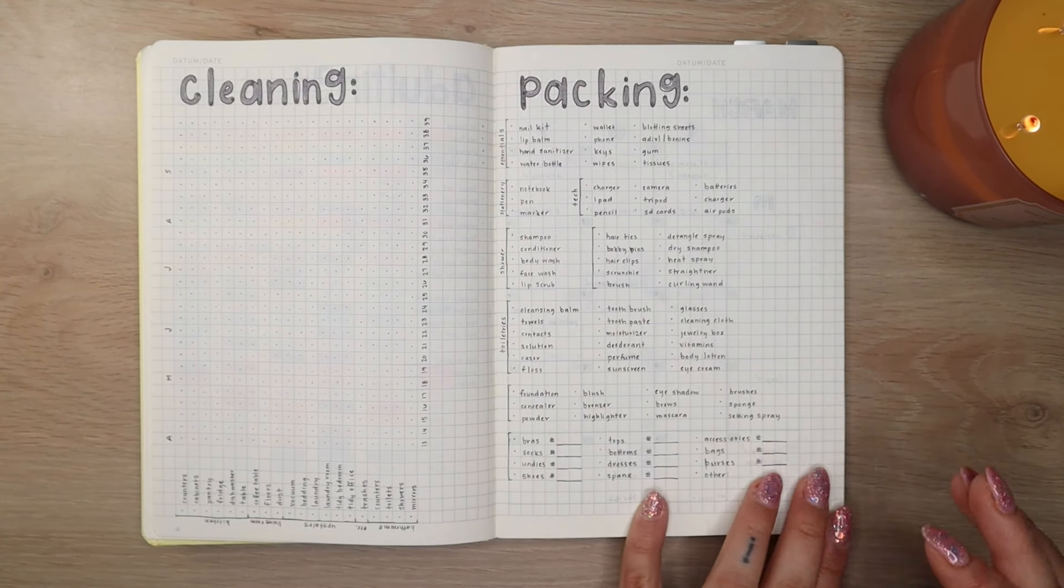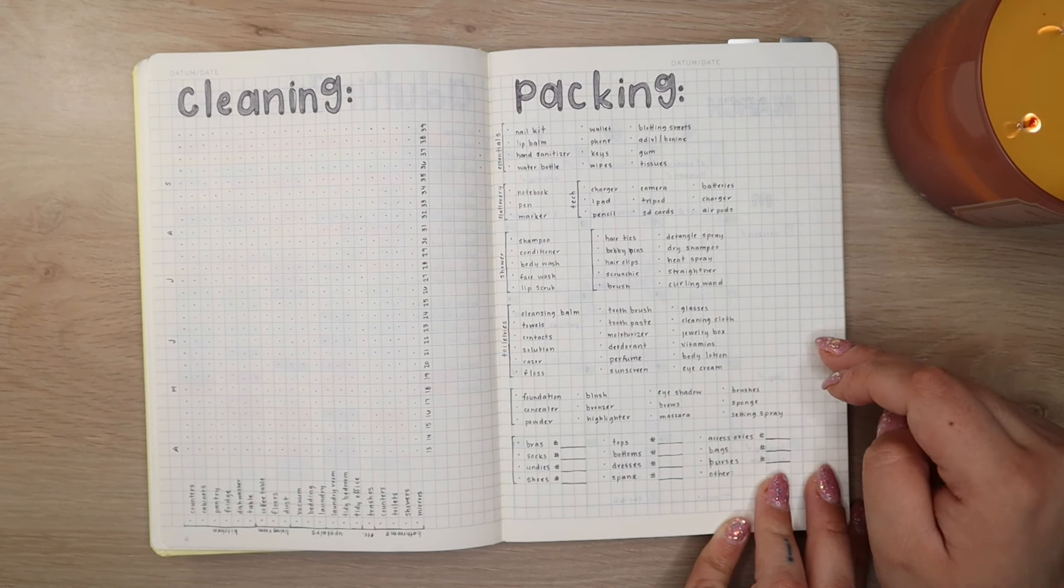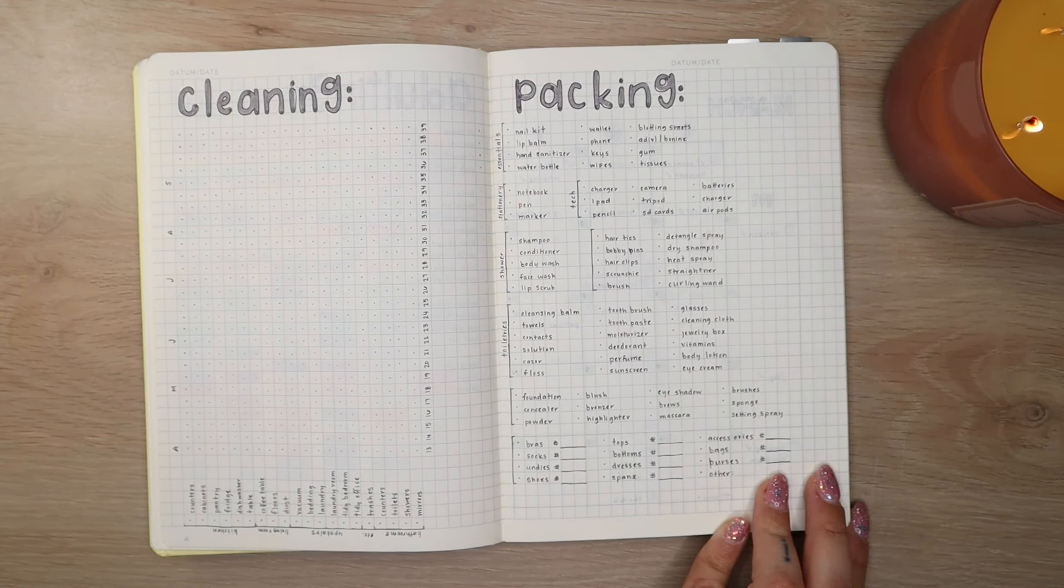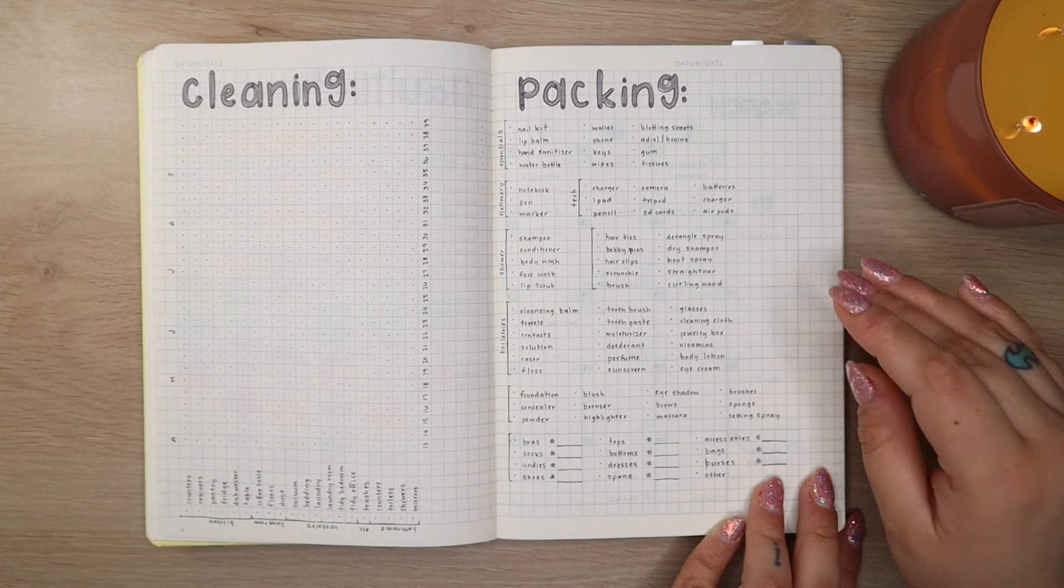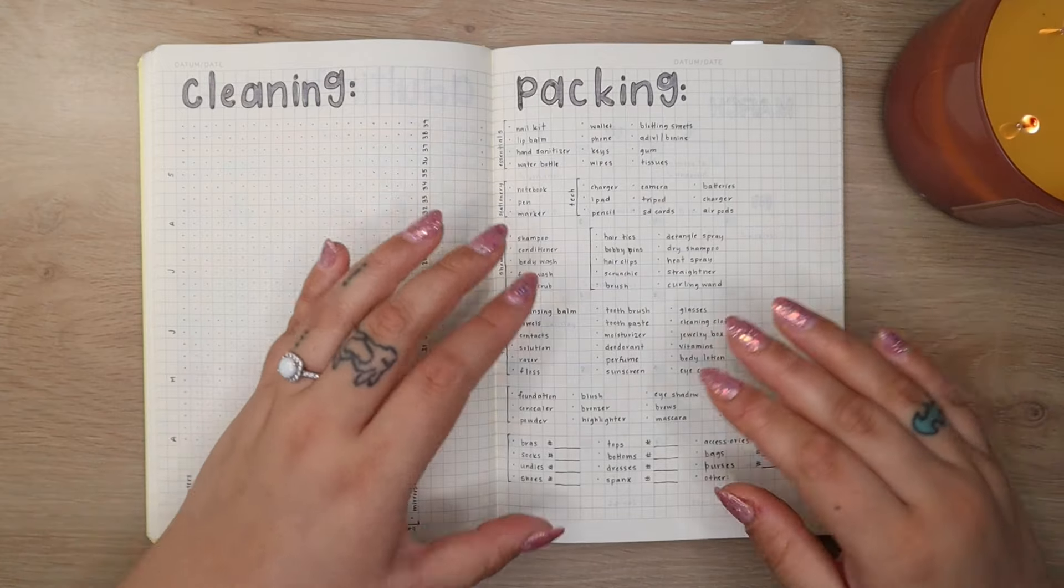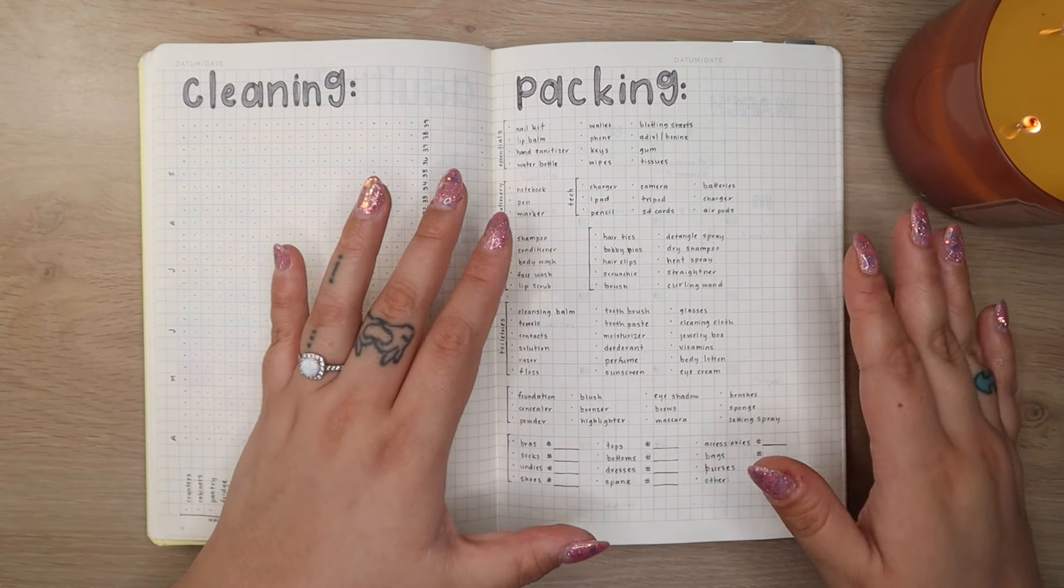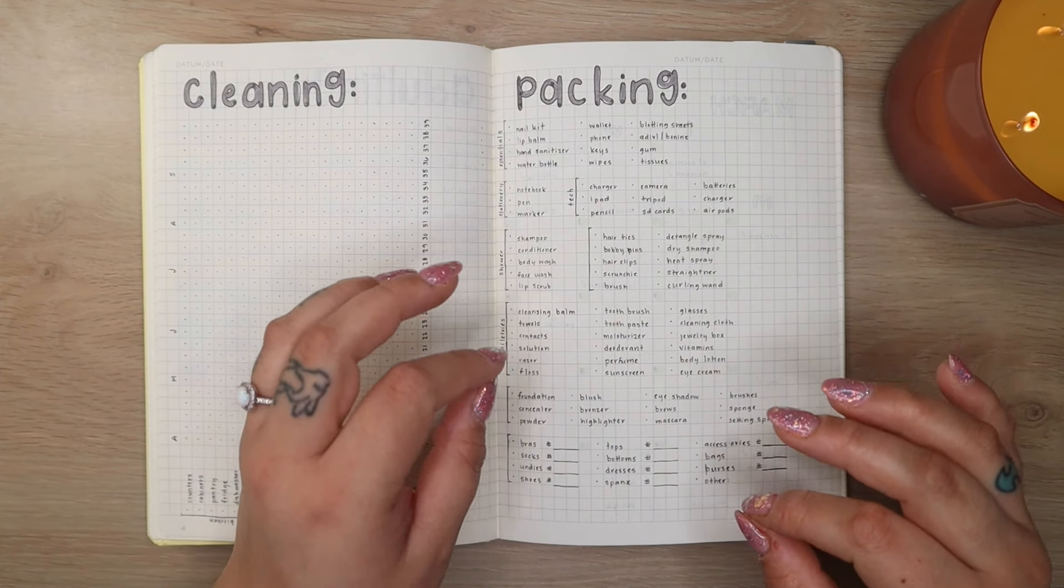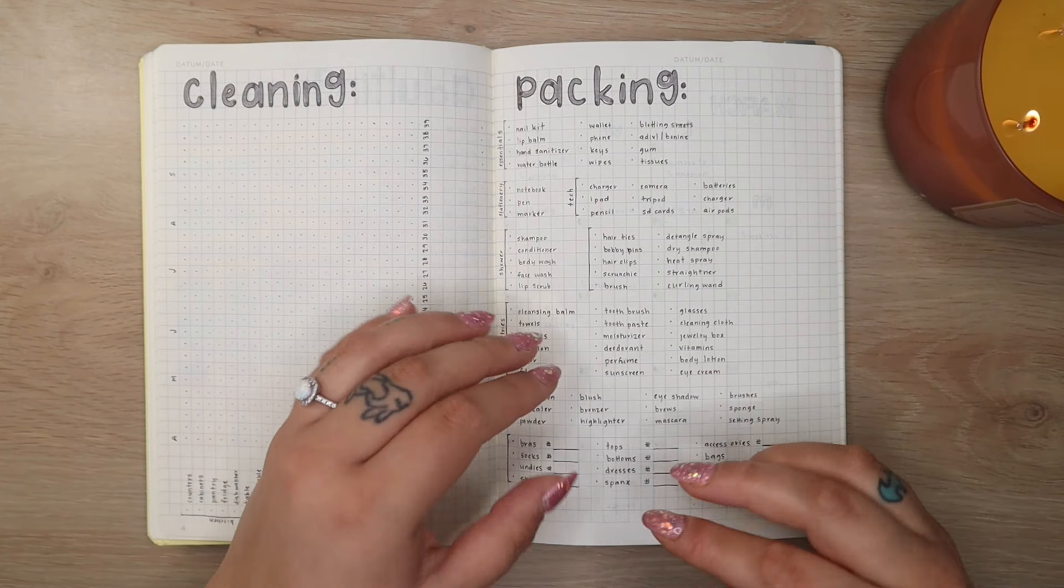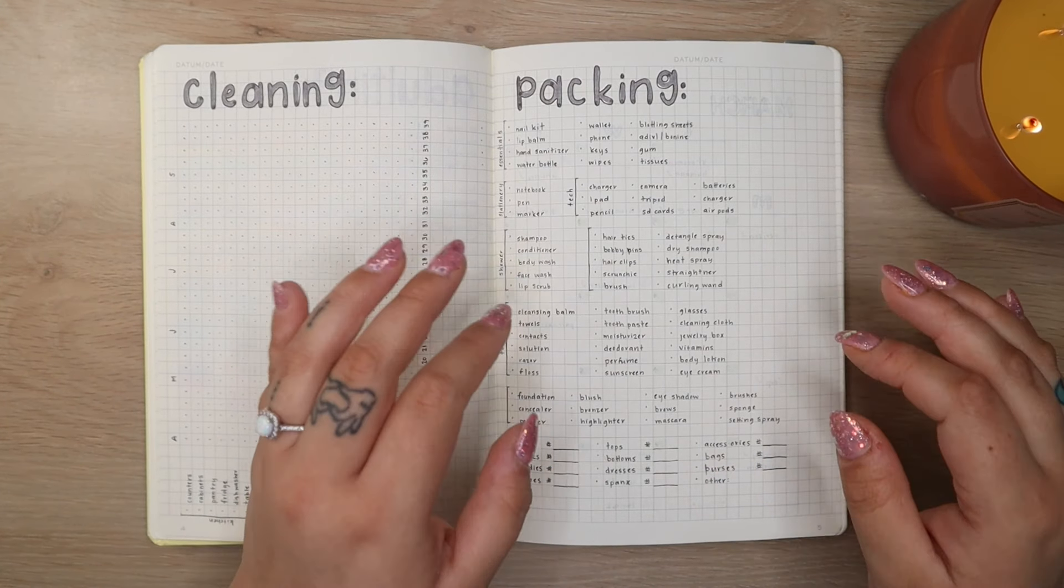I also have a perpetual packing list. This is something that I added into one of my notebooks. I want to say middle of last year or something and I love having it because this is basically just like a good baseline for everything that I'm going to need for any trip that I could ever go on. And then based on the trip I can kind of tailor, add, and subtract things that I would need for that specific trip. But this is a good starting point.